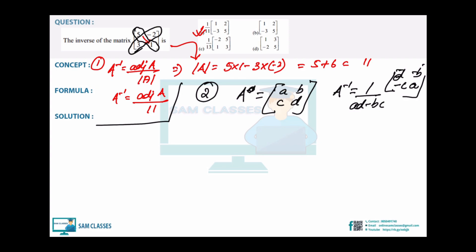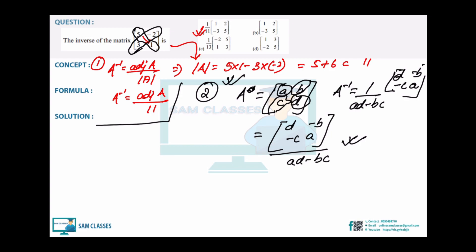We know det(A) = ad - bc. If they give values where 1/det is common in all options, use the direct formula. Otherwise the adjoint/det method is easier. Our target is to save as much time as possible.